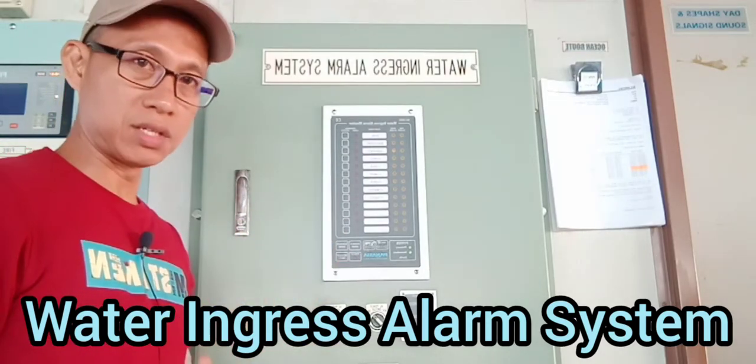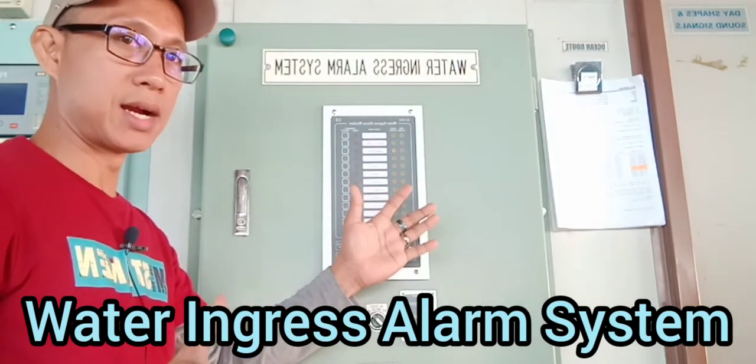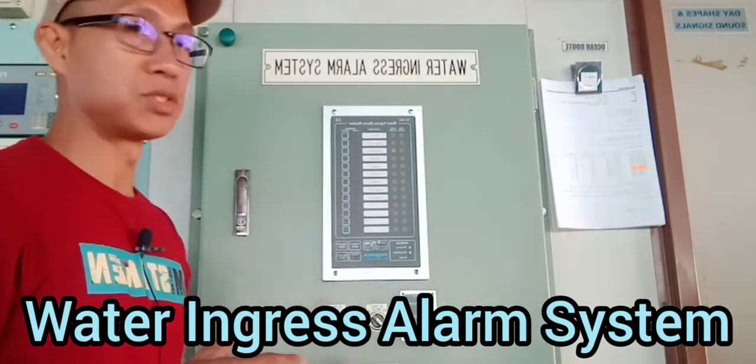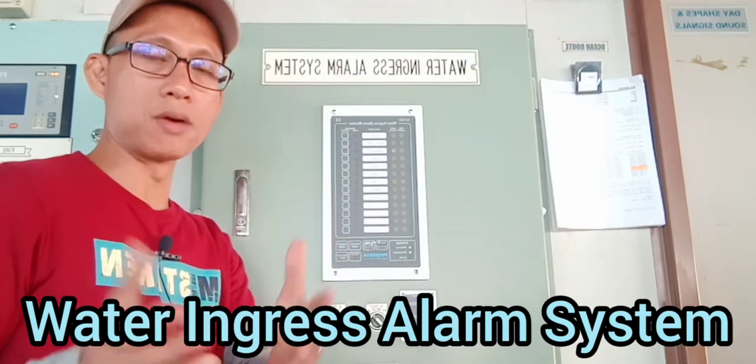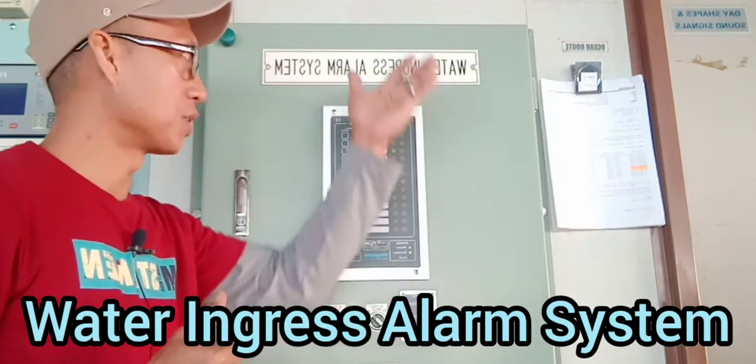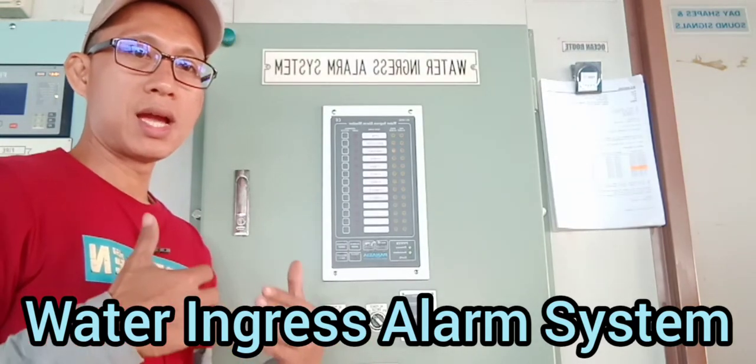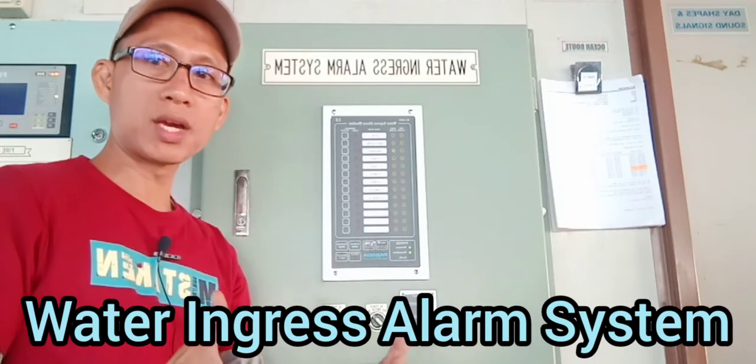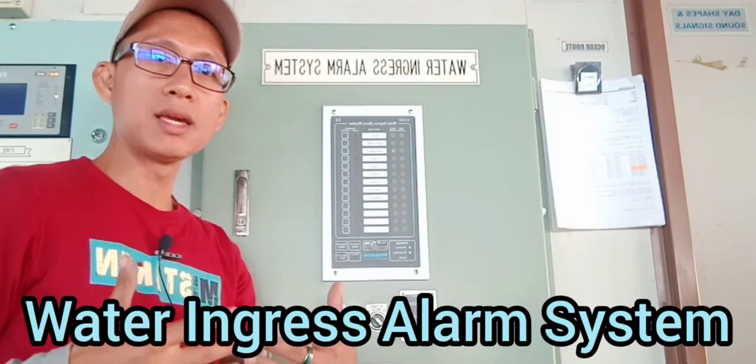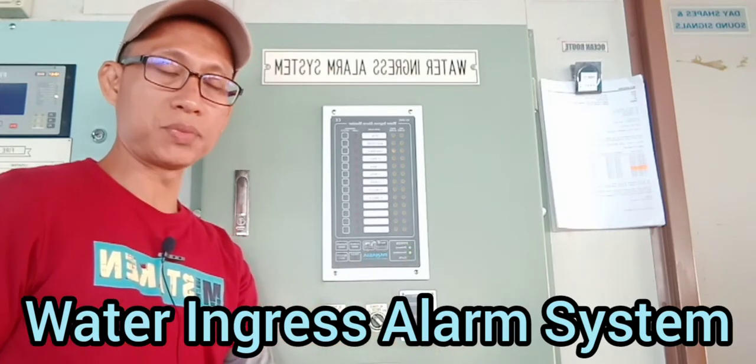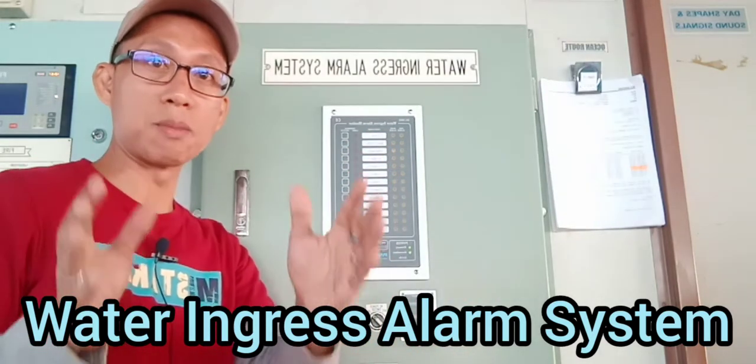With this vessel we have this console or panel board for the water ingress alarm system. This system we have on board is a system where we can monitor as soon as possible any flooded area of the vessel. Later I will give some details of the areas of the water ingress alarm system.